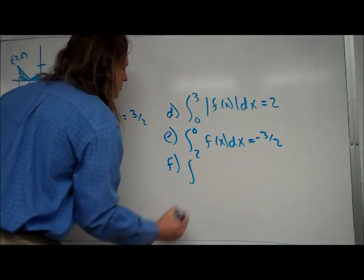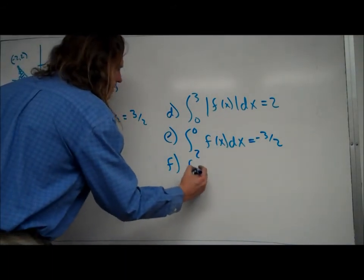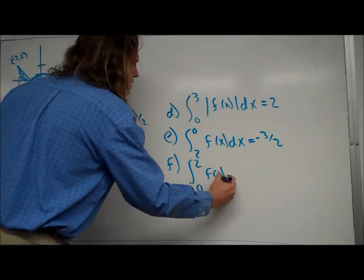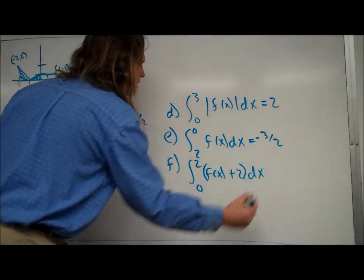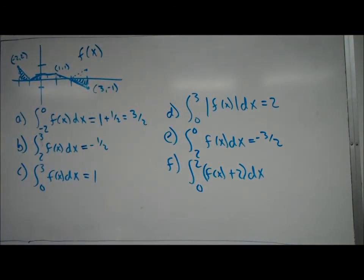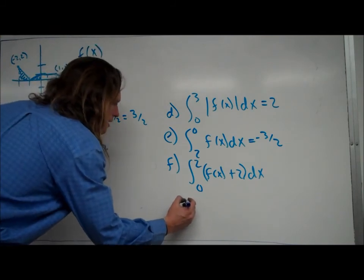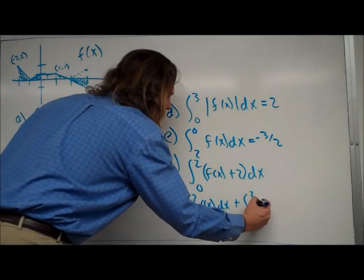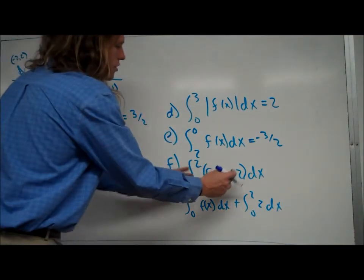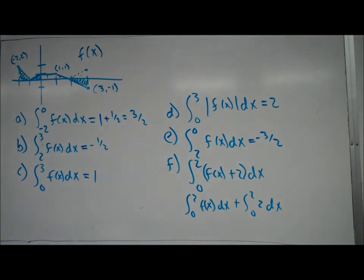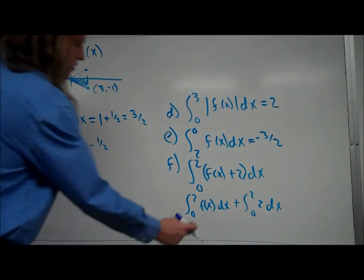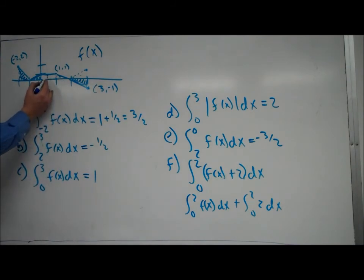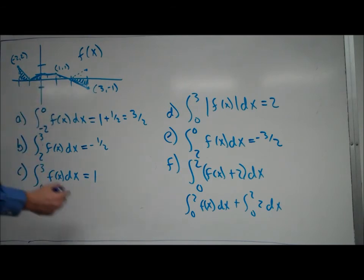Let's look at the integral from 0 to 2 of f of x plus 2. What the plus 2 does is shift the graph up 2 units. But how I like to think of it is to split this into two integrals — you're allowed to do that with integrals when you have separate terms, which are things split by plus or minus. So I can make this the integral from 0 to 2 of f of x, plus a separate integral from 0 to 2 of just 2. The integral from 0 to 2 of f of x is the area under the curve from 0 to 2, which is 1 plus 1 half, so 3 halves.